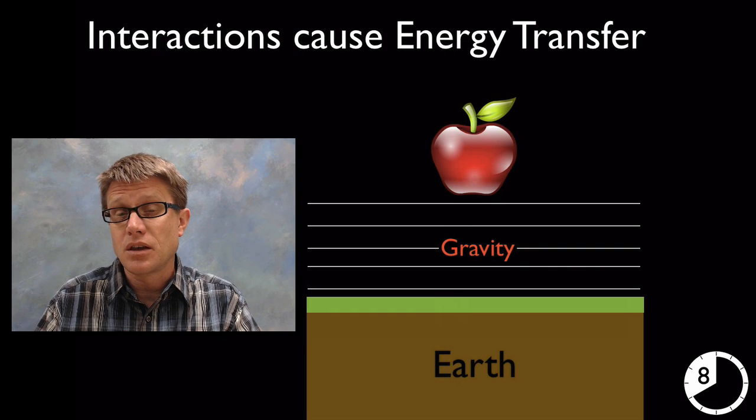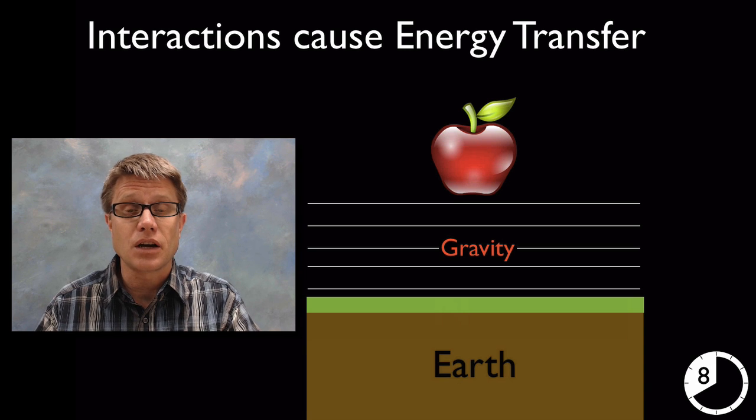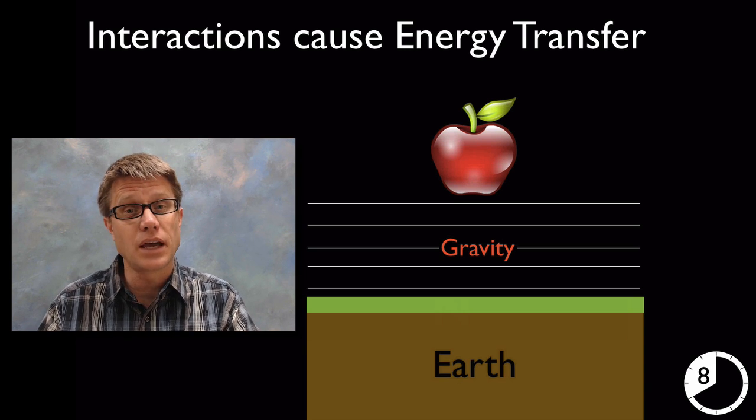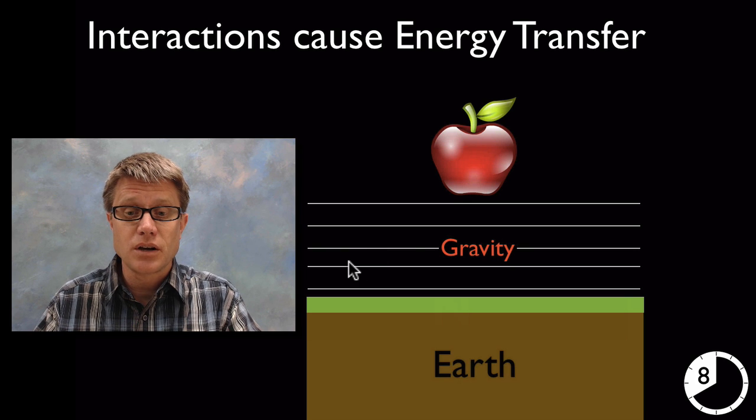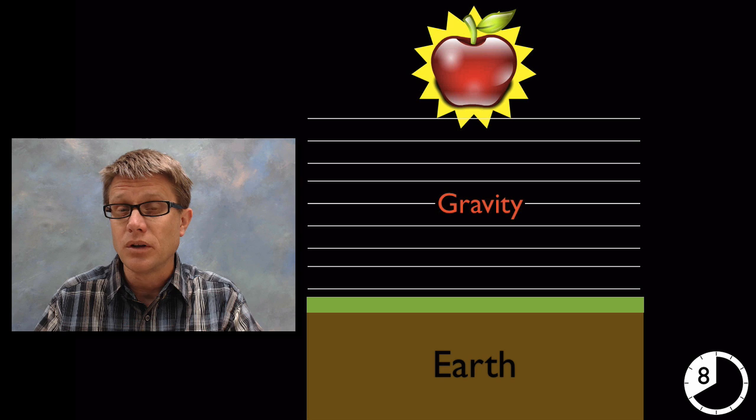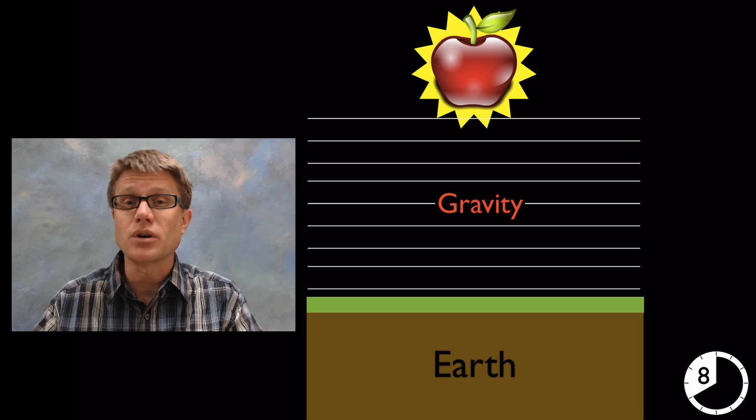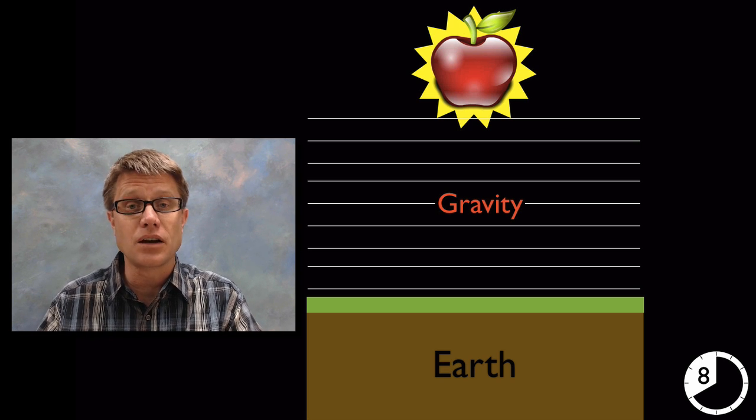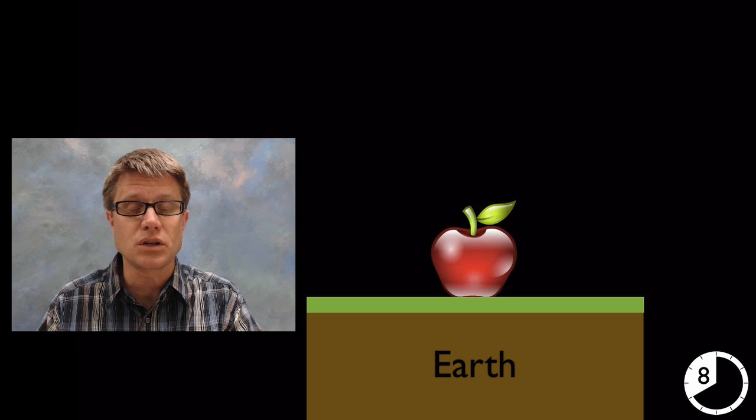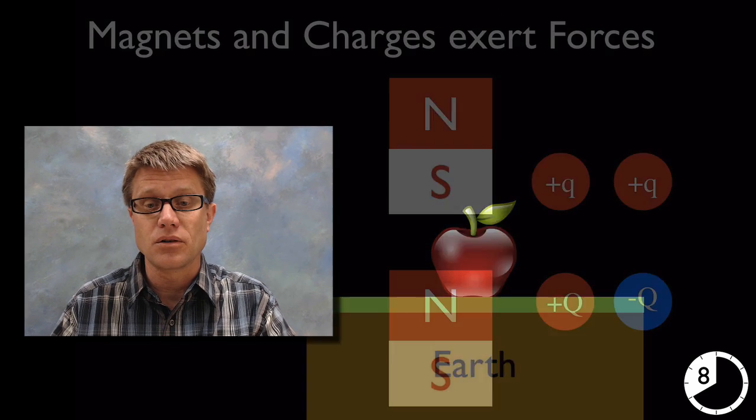As we move into the middle school then we want to start talking about the interactions causing transfer between objects or energy transfer. And so there's a gravitational field between the apple and the earth. And as we raise that apple we're really changing the force of that field or the energy contained within that field. So we're storing energy in the apple which we could return as it falls to earth.